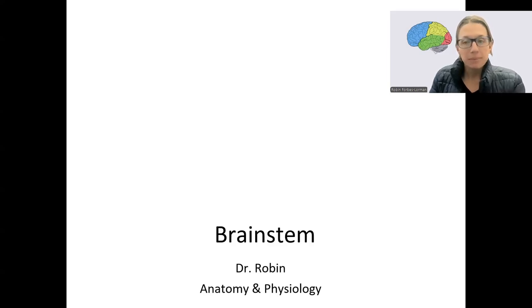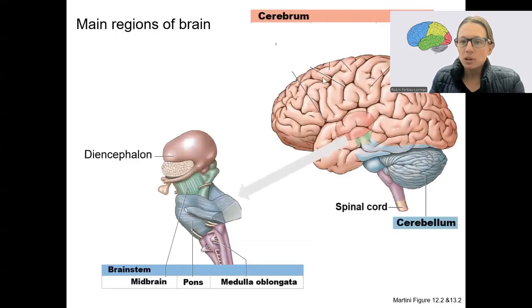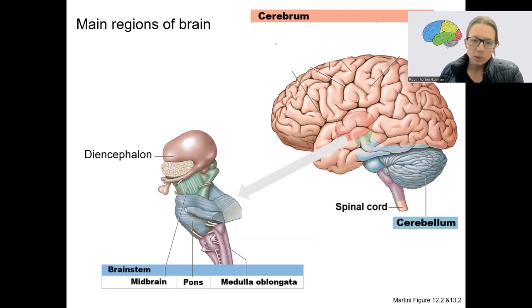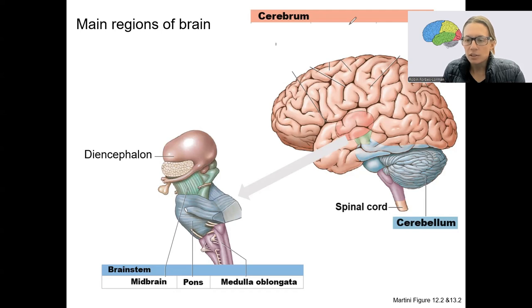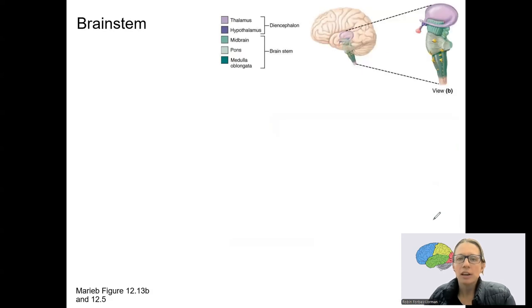All right, the third main brain region is the brainstem. So we've been through the cerebrum and the diencephalon, and now we are here. This green, blue, and purple region, pretty deep in the brain, is the brainstem. It connects to the spinal cord. Here's a picture showing where we are — the purple on top is the thalamus.